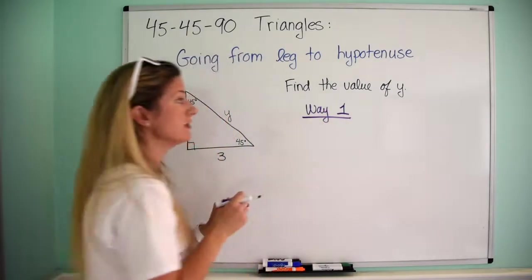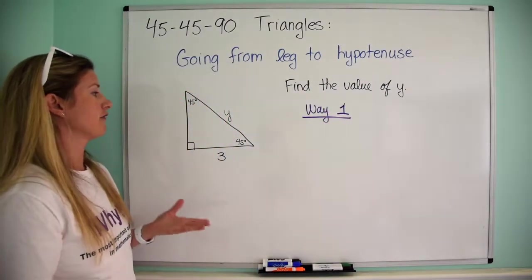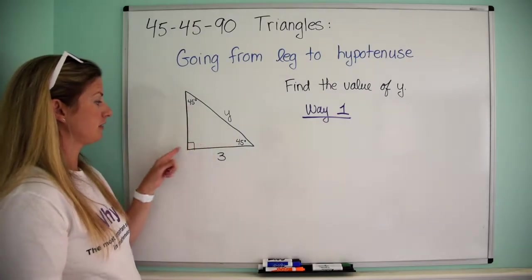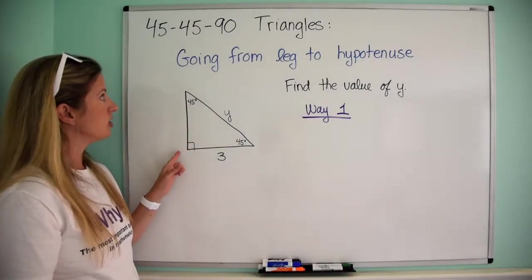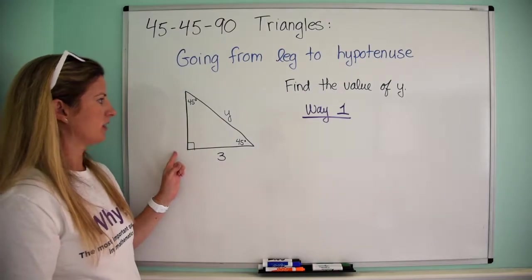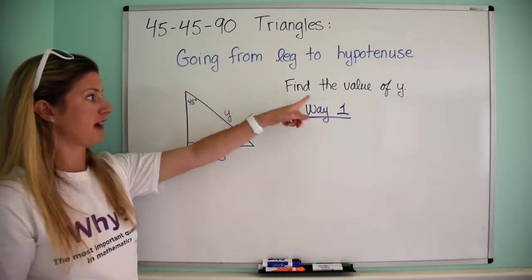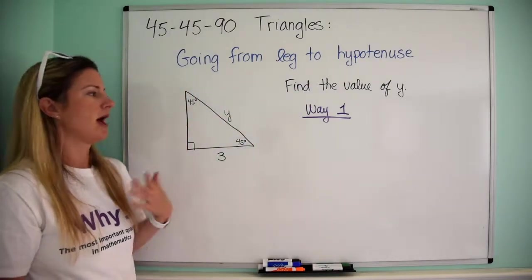Okay, so in this I drew a 45-45-90 triangle right here, so as you can see 45-45 and that's obviously 90. So I know the measure of one of the legs and I want to find the value of y, which is the hypotenuse.